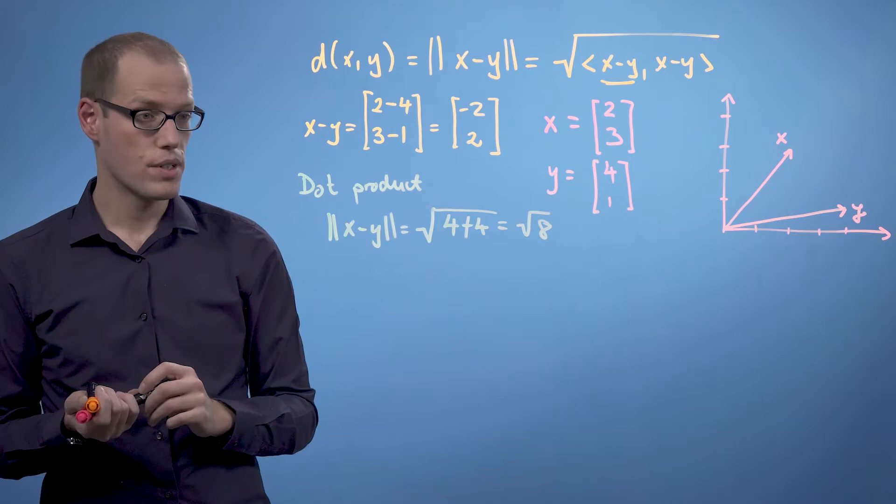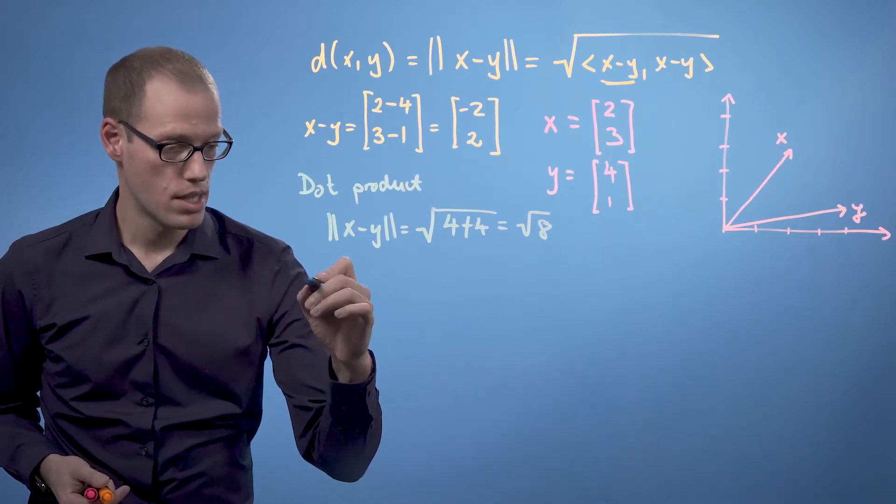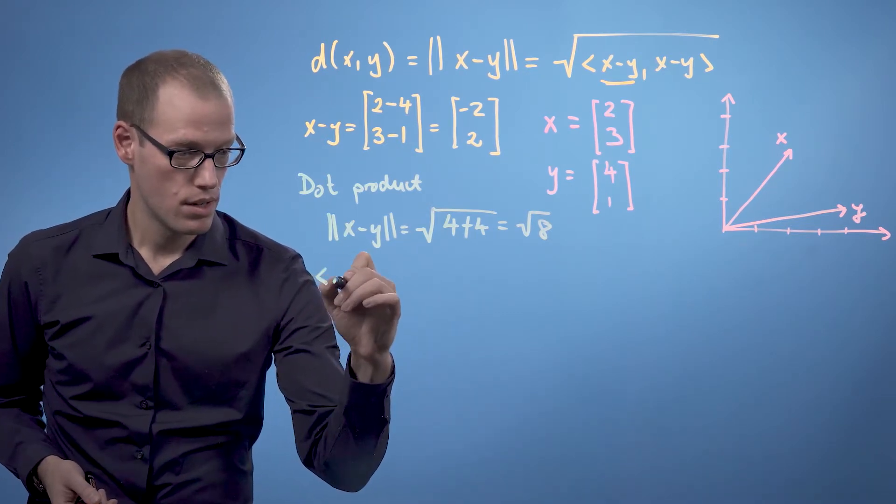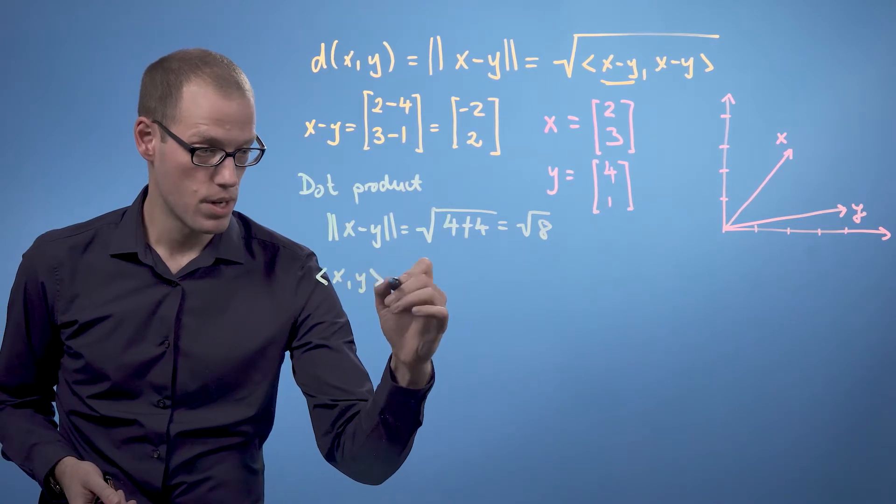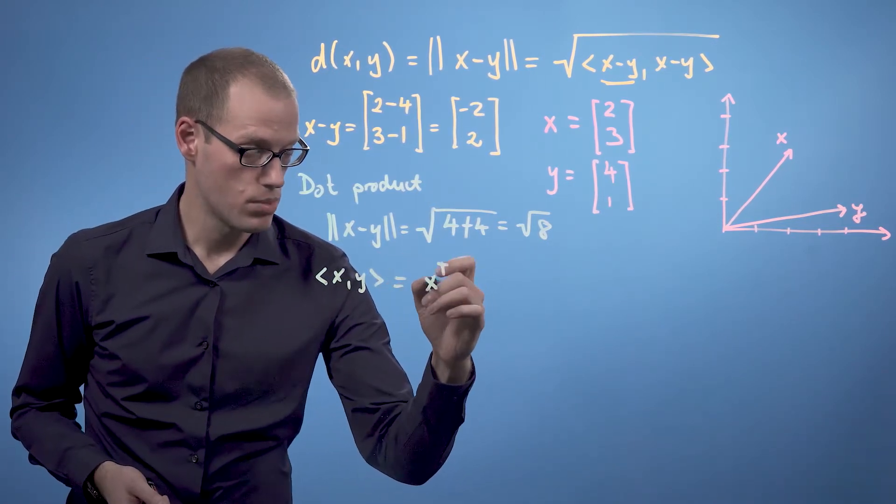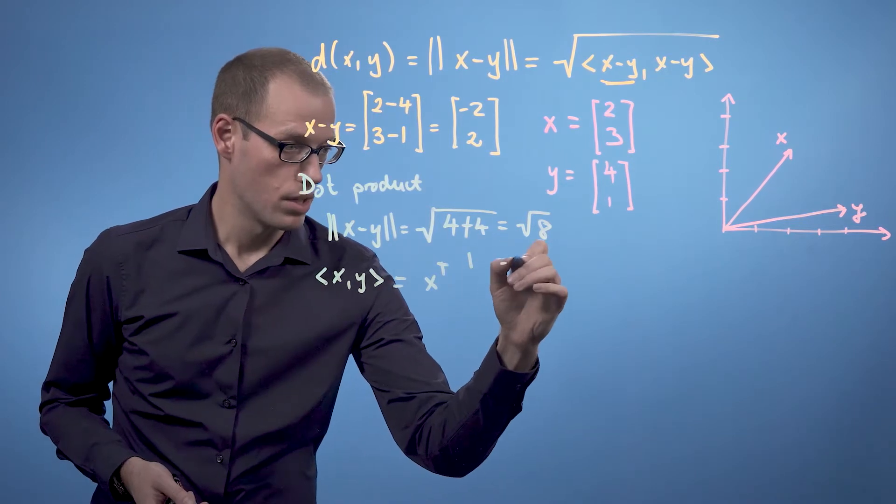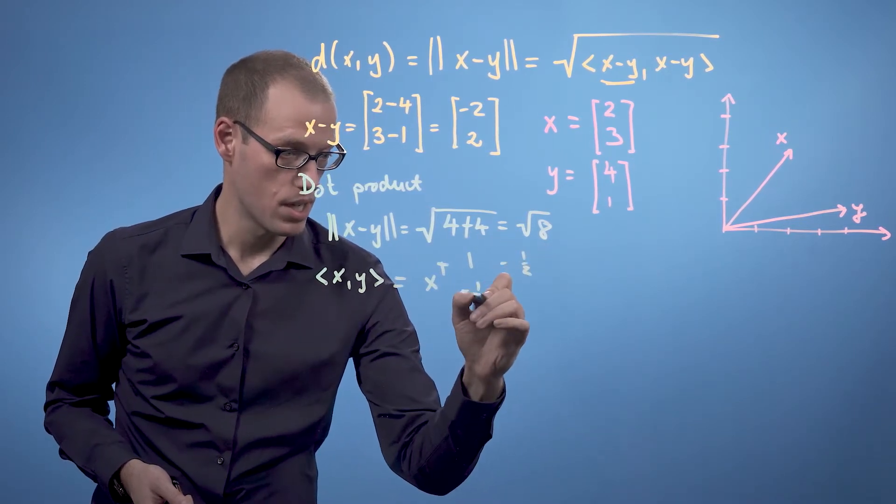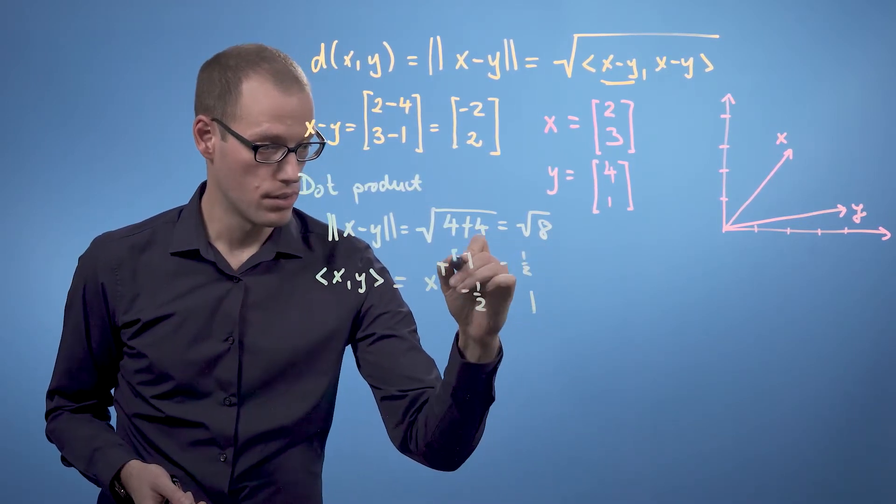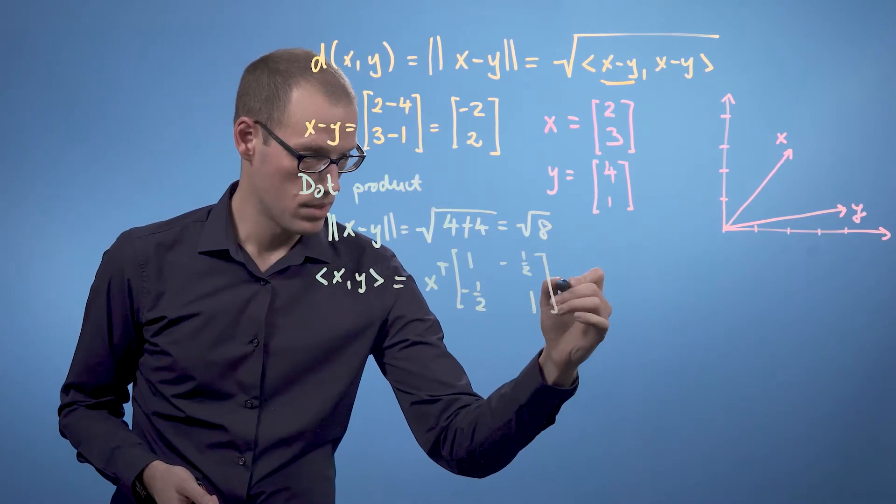If we use a different inner product, let's say we define the inner product between x and y to be x transpose times [[1, -1/2], [-1/2, 1]] times y.